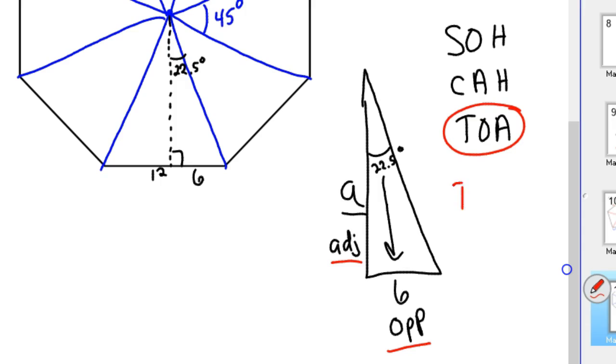So we know tangent of our angle, 22.5, equals opposite, which is 6, over adjacent, which is A.